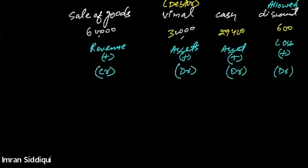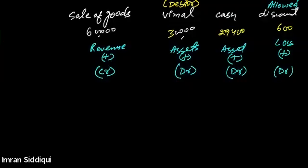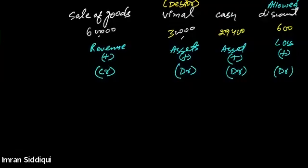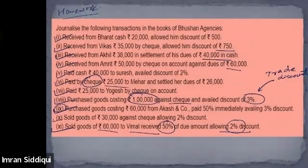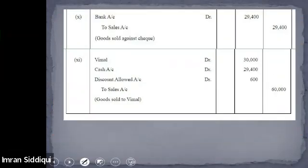Vanisha confirms: Vimal account debit, cash account debit, discount allowed account debit, to sales account. That is correct. The correct general entry: Vimal account debit 30,000, cash account debit 29,400, discount allowed account debit 600, to sales account 60,000.